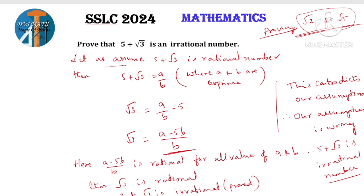So this is how we follow. First, let us assume 5 plus root 3 is a rational number. We express it in the form a by b, where a and b are co-prime integers. Then we rearrange so that the root is on one side and the variables on the other. This RHS is rational, so root 3 would be rational. But root 3 is irrational. So this contradicts our assumption — our assumption is wrong. Therefore 5 plus root 3 is irrational. If we have root 3 plus root 5, root 2 plus root 7, we will practice this.